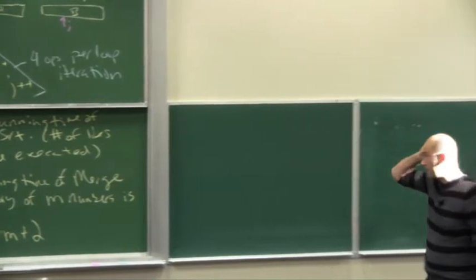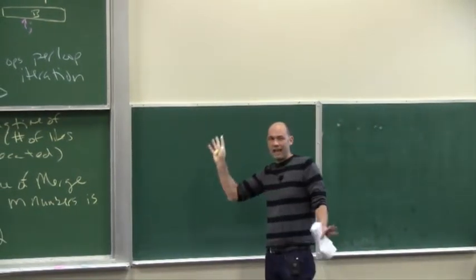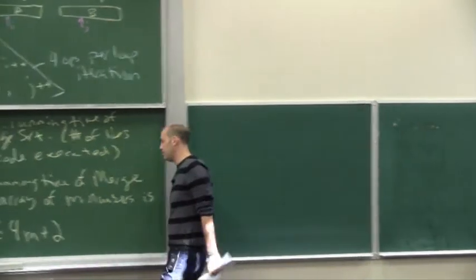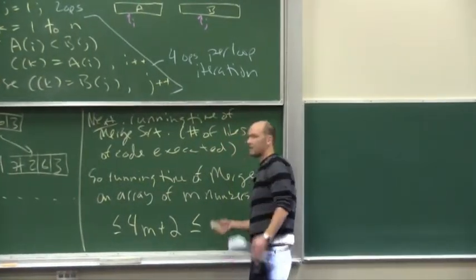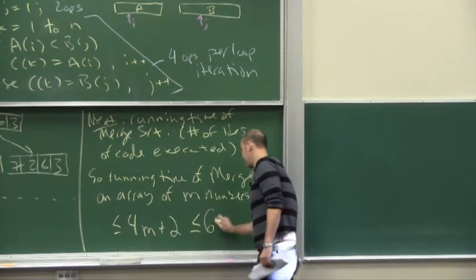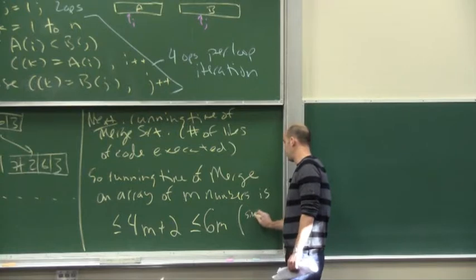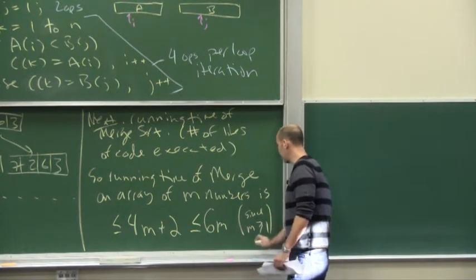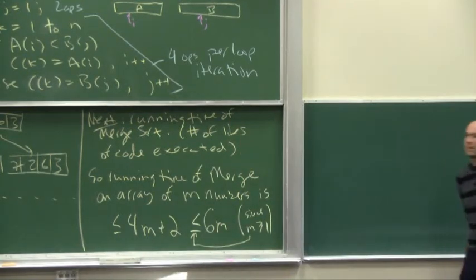And let me write down something which is correct, but kind of laughably sloppy. But it'll just make our life easier. So instead of 4M plus 2, let's just, between friends, call this at most 6M. Which is valid. It's of course very sloppy. But it is true, since M is at least 1.